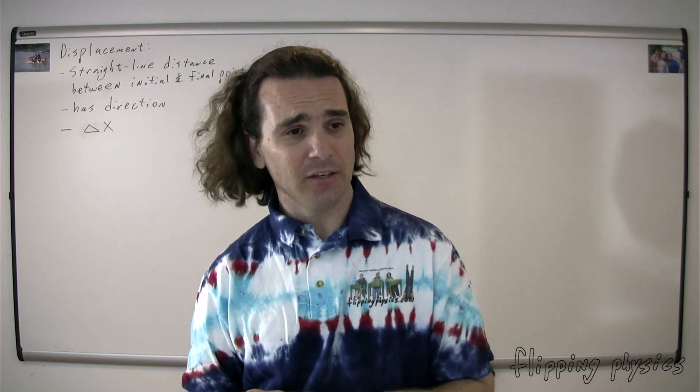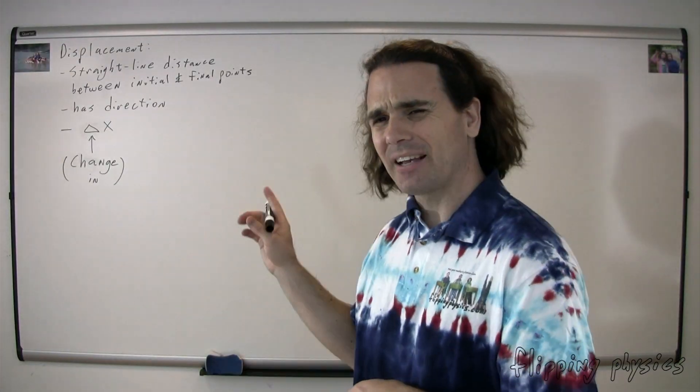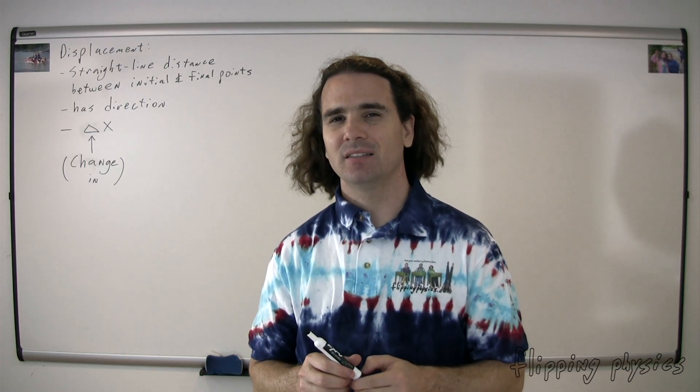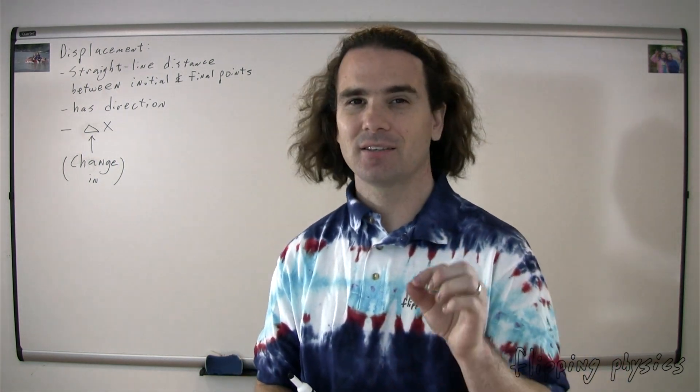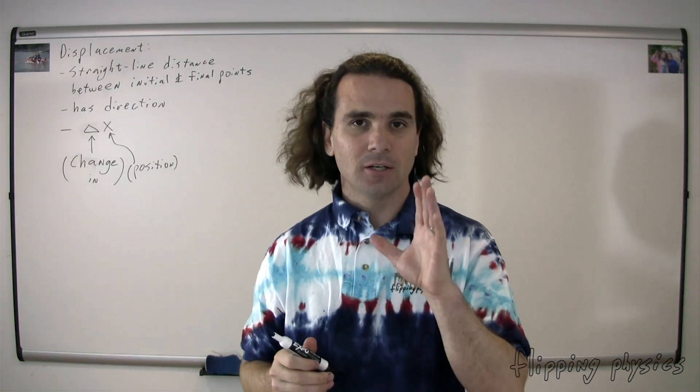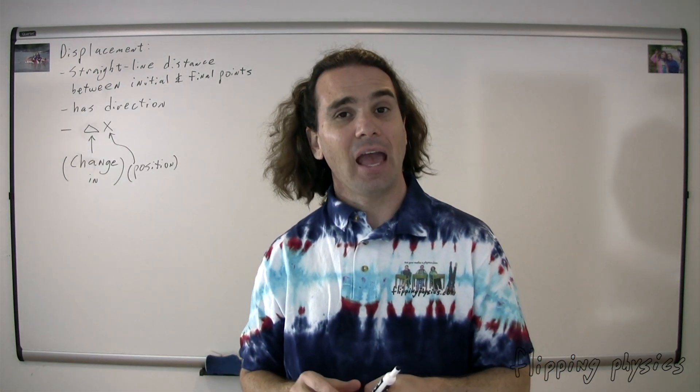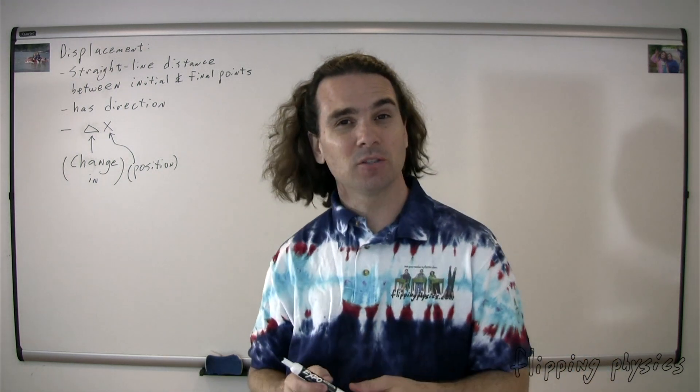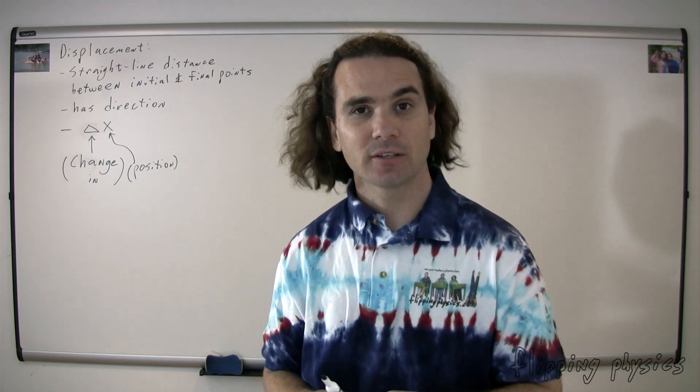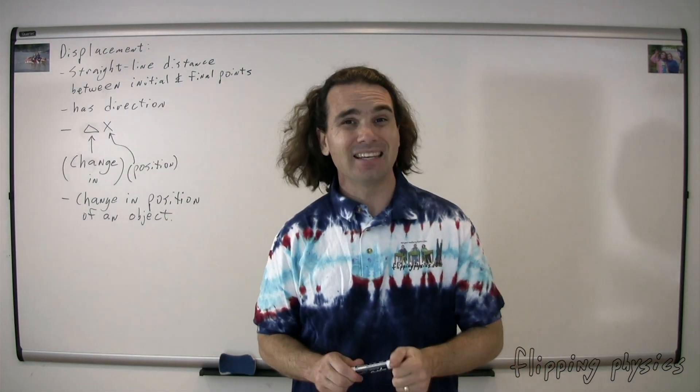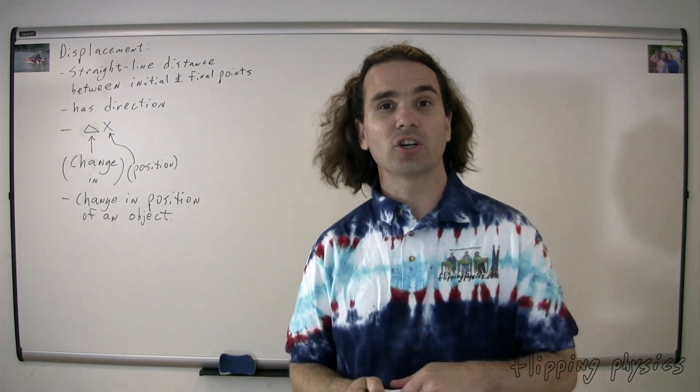Yes, Billy, delta does mean change in. Bo, what does the X mean? X means distance. Actually, no, Bo, X does not mean distance. People often confuse X with distance. But X actually stands for position. X stands for position. So again, X means position. And if delta means change in and X means position, then delta X or displacement actually means the change in position of an object. So the symbol for displacement is delta X and that literally means the change in position of an object.